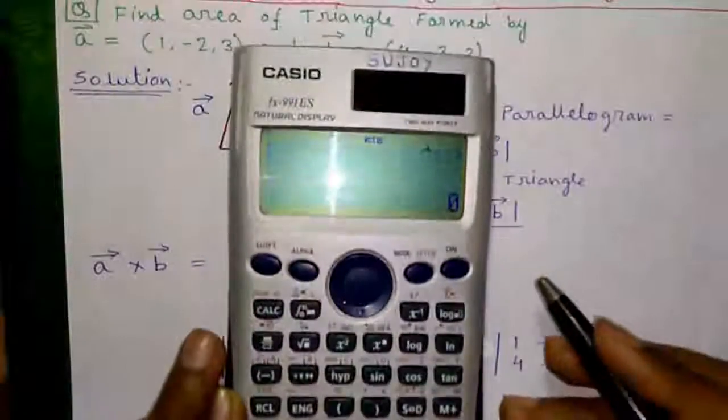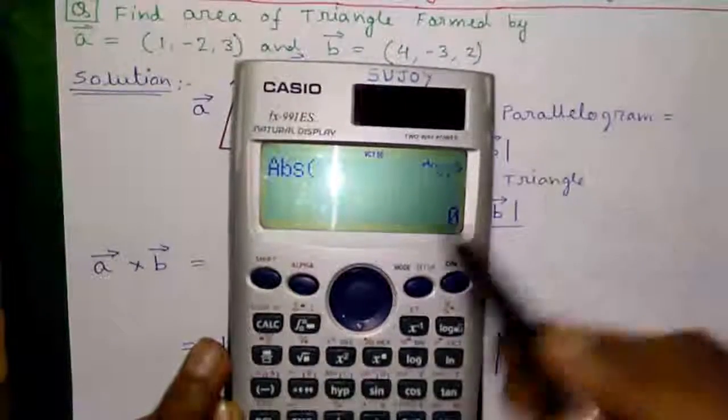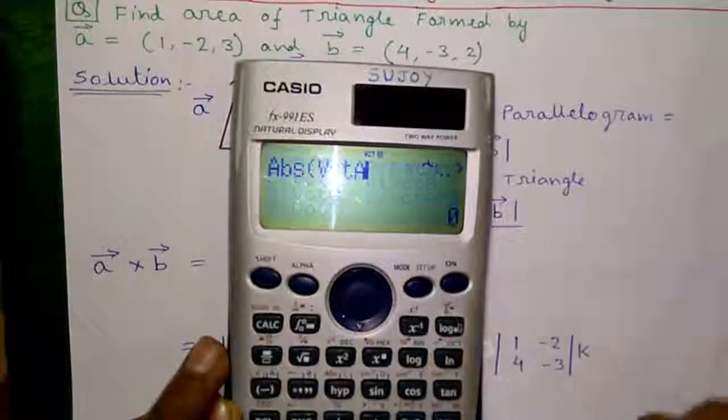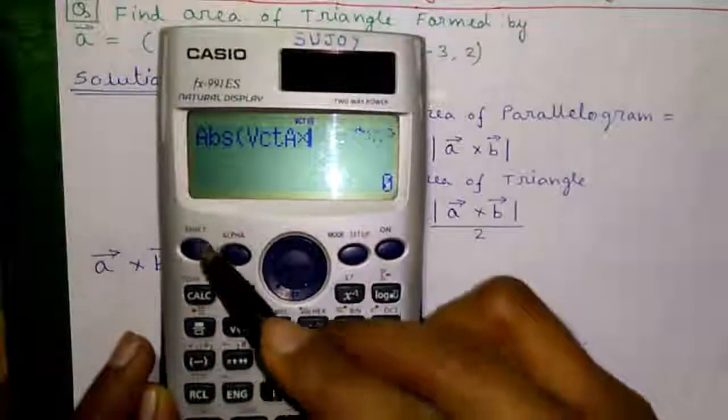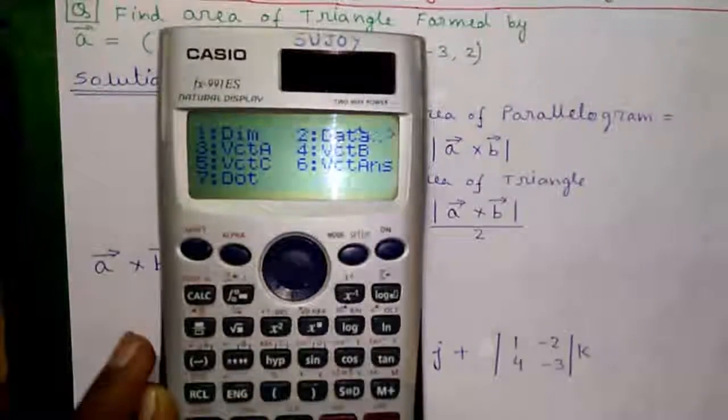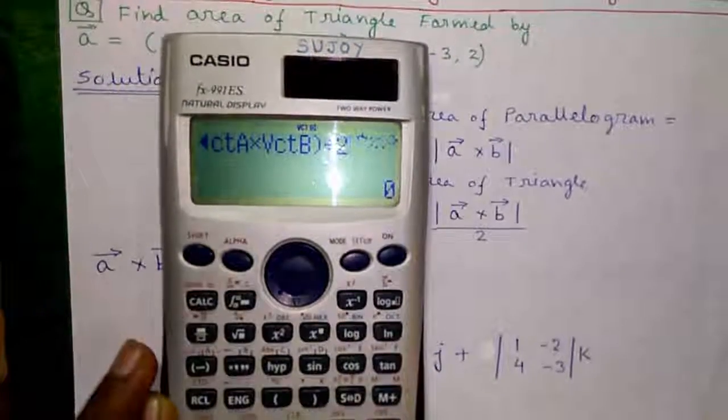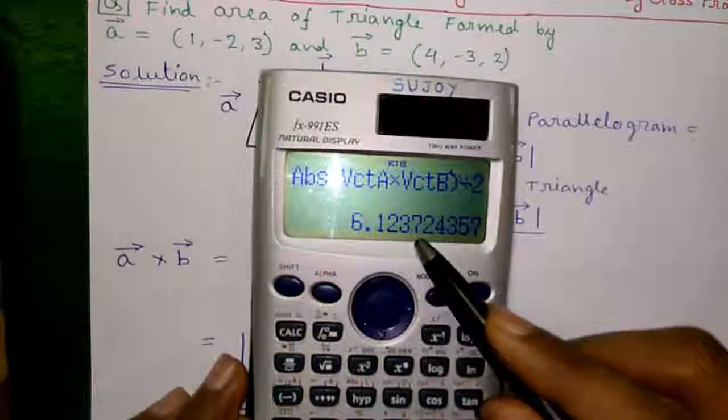Press AC to clear screen. Now press shift and hide button to get absolute operator, press shift 5, 3 for vector A into or cross shift 5, 4 for vector B, bracket close, divided by 2, press equals to which is 6.1237.